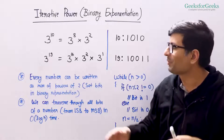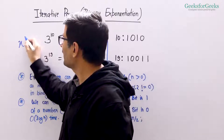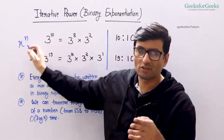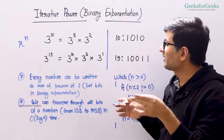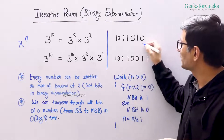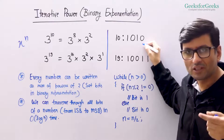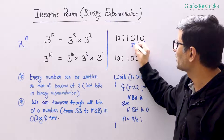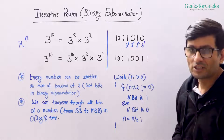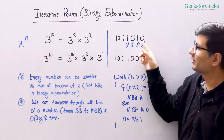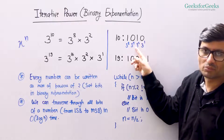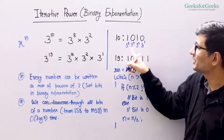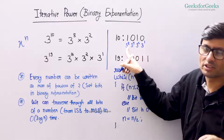So what we do here is: we want to compute x raised to the power n. We traverse through all the bits of the number n, and for every bit that we traverse, we consider it as a multiplier of the corresponding power. This bit is a multiplier of x raised to power 1, this is a multiplier of x raised to power 2, this of x raised to power 4, and this of x raised to power 8. When you see a 0 bit, you ignore it. When you see a 1 bit, you multiply your result by the corresponding power of x. You initialize your result as 1.